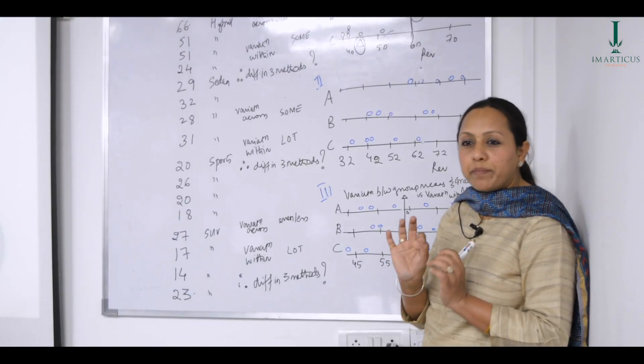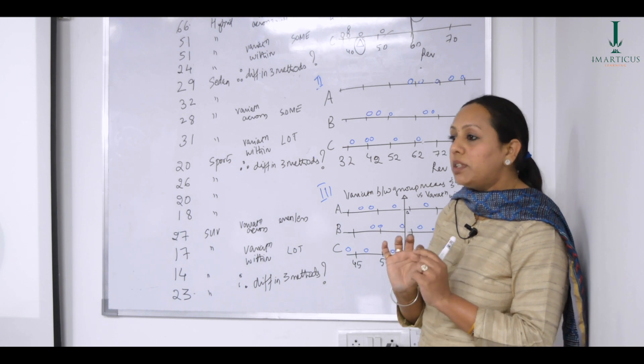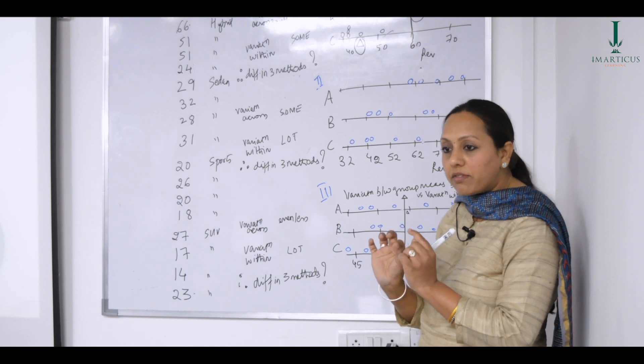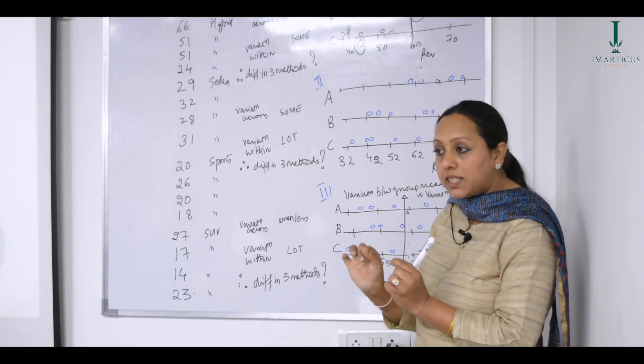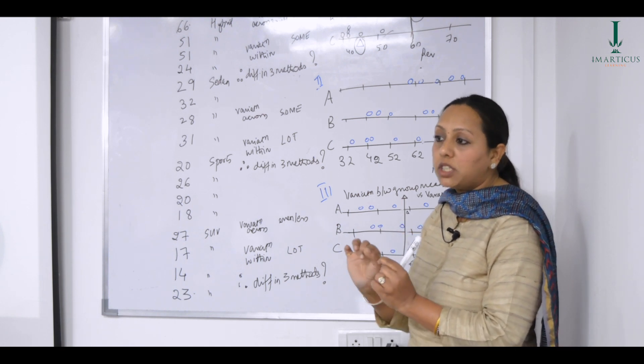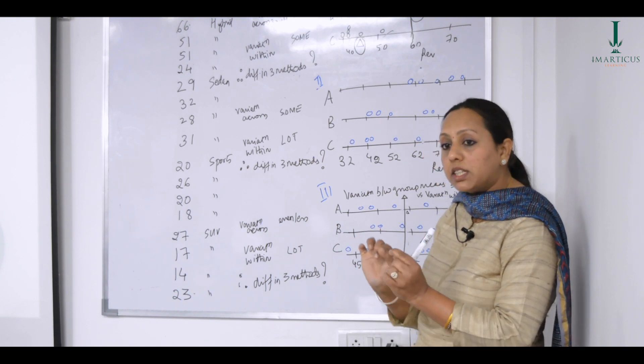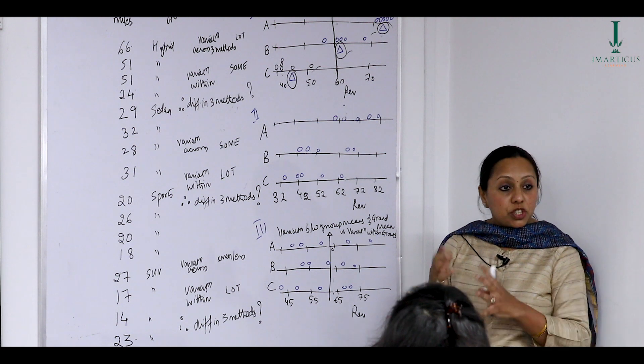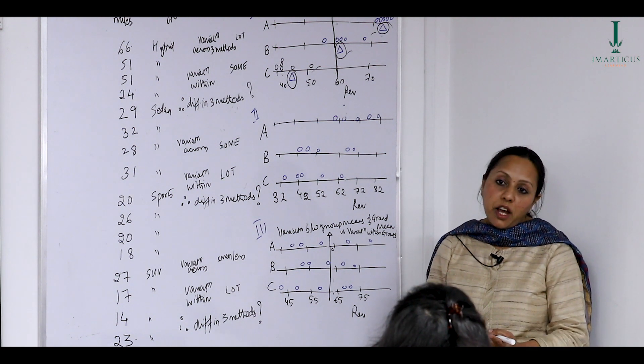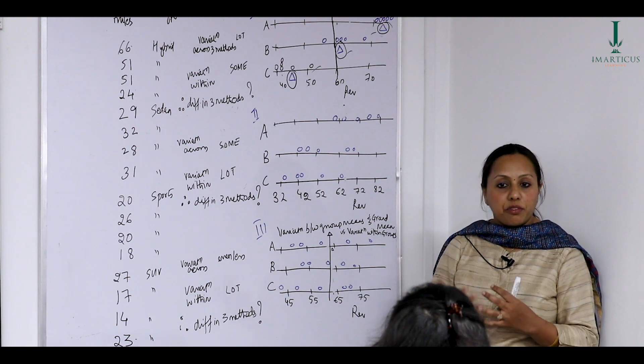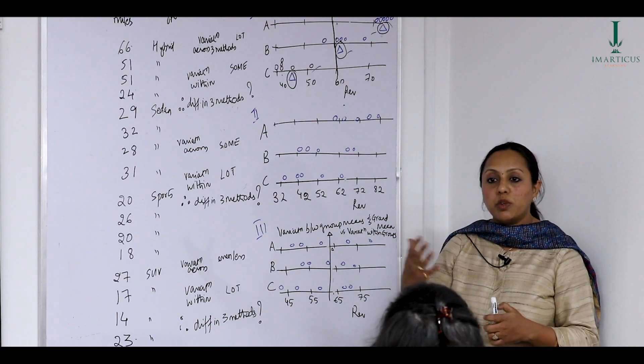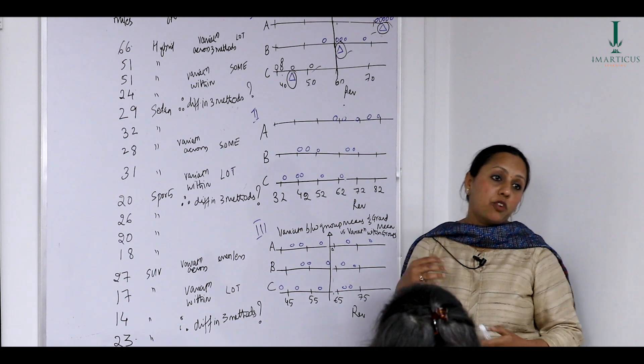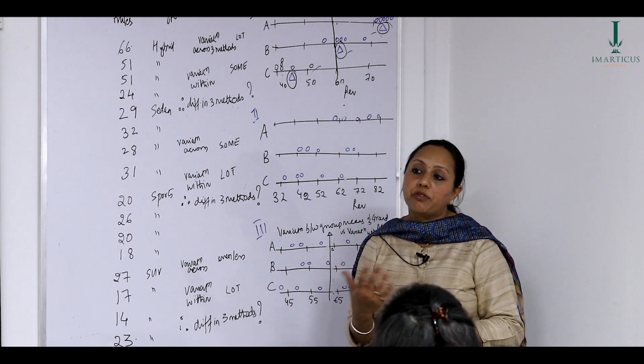So basically, are we able to say that it is the variation between the methods and variation within the methods that is helping us reach a conclusion that indeed the three methods are different from each other? Yes. So that is what ANOVA uses. We have been doing this as part of our daily routine or daily activity choosing which methods without understanding that what we are actually doing, statisticians have called it the technique of analysis of variance.